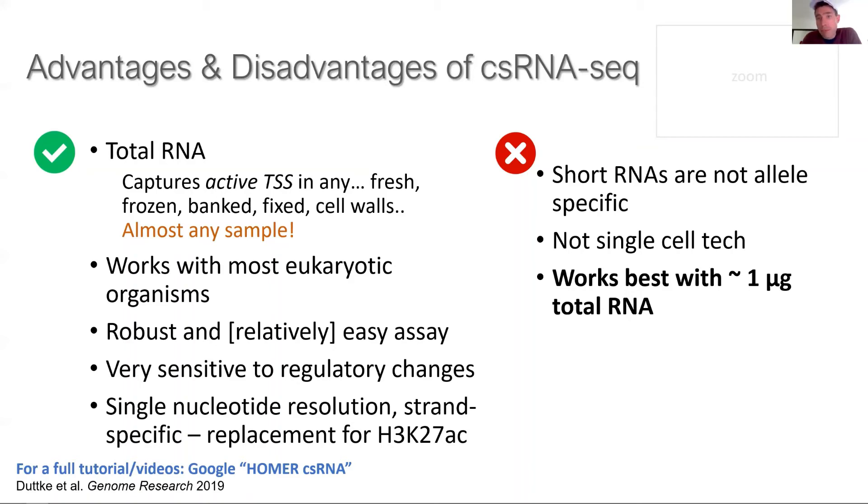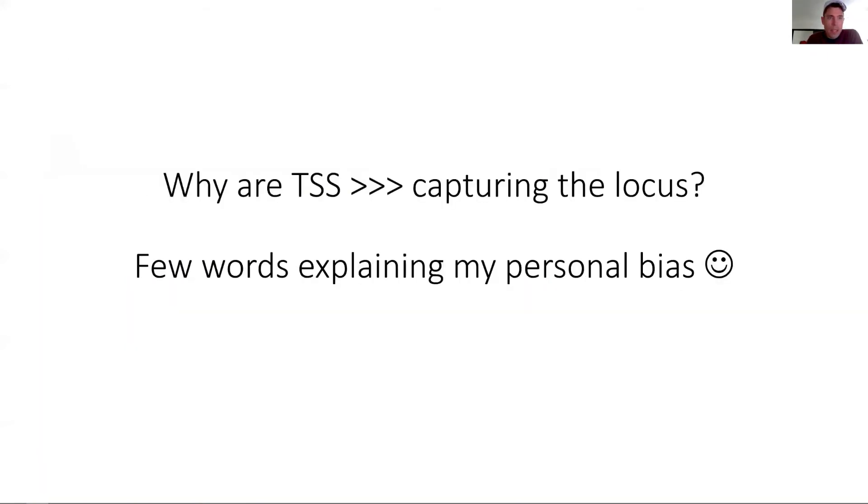Transcription start site is very important information, as shown here. CSRNAseq basically gives you the same information for this BIM1 enhancer as nascent methods such as GRO-Cap or coPRO. Of course there are also disadvantages with the method, which is we capture small and very rare species of RNA. As such they're not allele-specific because they're not long enough to distinguish the two chromosomes. It will never be a single-cell technology and it works best with higher amounts of RNA, which is about 1 microgram of total RNA.